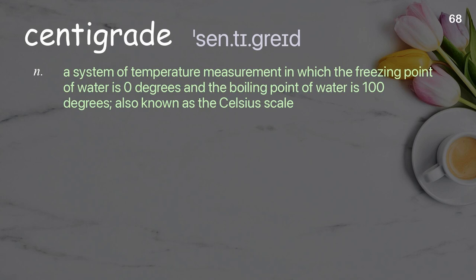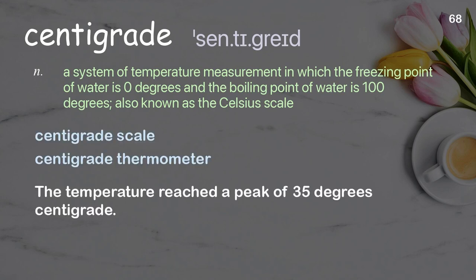Centigrade: a system of temperature measurement in which the freezing point of water is 0 degrees and the boiling point of water is 100 degrees, also known as the Celsius scale. Examples: centigrade scale; centigrade thermometer. The temperature reached a peak of 35 degrees centigrade.